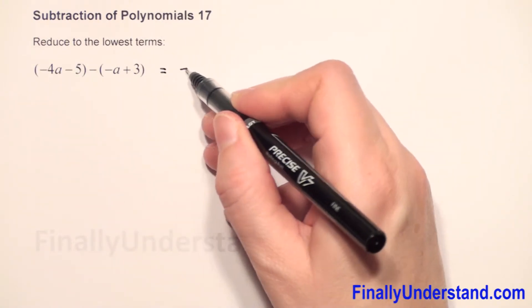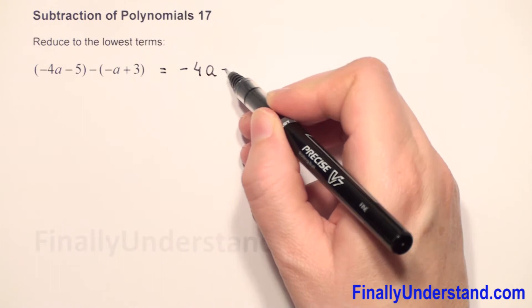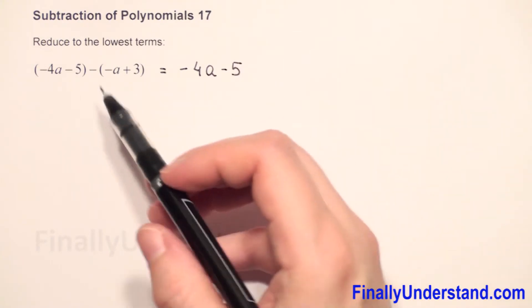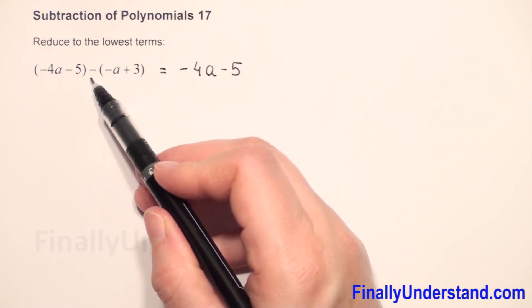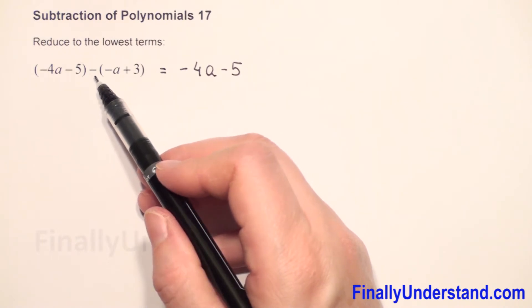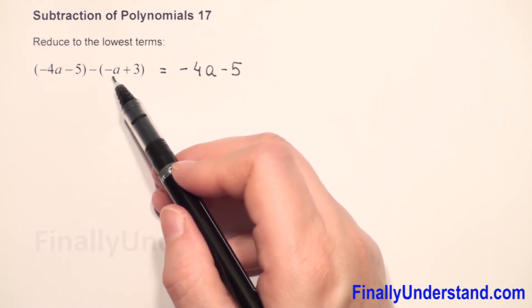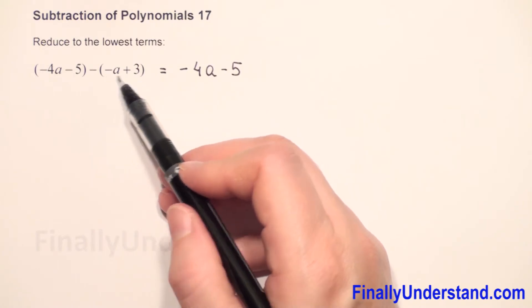So we have negative 4a minus 5. Next, we have a negative sign before parentheses. When we have a negative sign before parentheses, we have to change the sign of every term in parentheses.